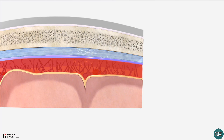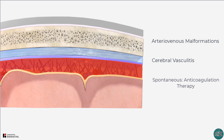There are several other much less frequently occurring causes of blood within the subarachnoid space, for example arteriovenous malformations, inflammatory causes like cerebral vasculitis, and spontaneous bleed secondary to anticoagulation, among many others.